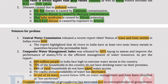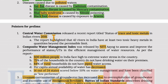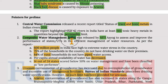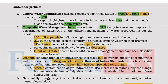Moving on to prelims pointers: The Central Water Commission released a report titled 'Status of Trace and Toxic Metals in Indian Rivers 2017', highlighting that 42 rivers in India have at least two toxic heavy metals in quantities beyond the permissible limit. The Composite Water Management Index was released by NITI Aayog to assess and improve the performance of states and union territories in efficient management of water resources. As per the report, 600 million people in India face high to extreme water stress.